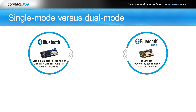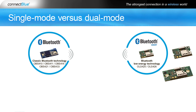To the right, you see single mode Bluetooth Low Energy devices. These devices are also known as Bluetooth Smart devices and are optimized for small battery-operated devices with low cost and low power consumption in focus. A typical single mode device is, for example, a heart rate sensor or the Connect Blue Bluetooth Low Energy Zero Port modules OLS 425 and OLS 426.